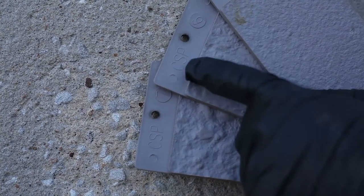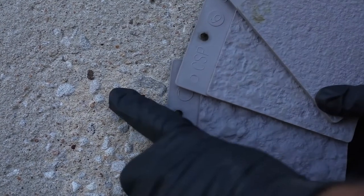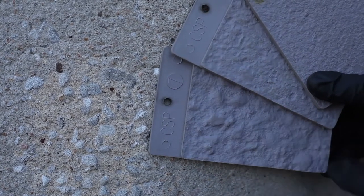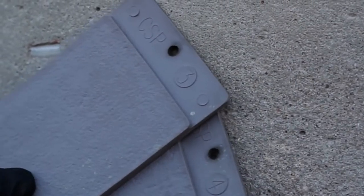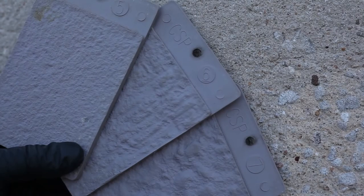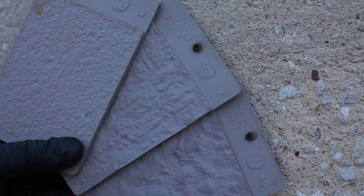The use of ICRI comparators against the prepared surface can ensure the proper level of surface preparation has been achieved. A surface profile of 3 resembles 60 grit sandpaper, while a profile of 6 exposes the aggregate in the substrate.